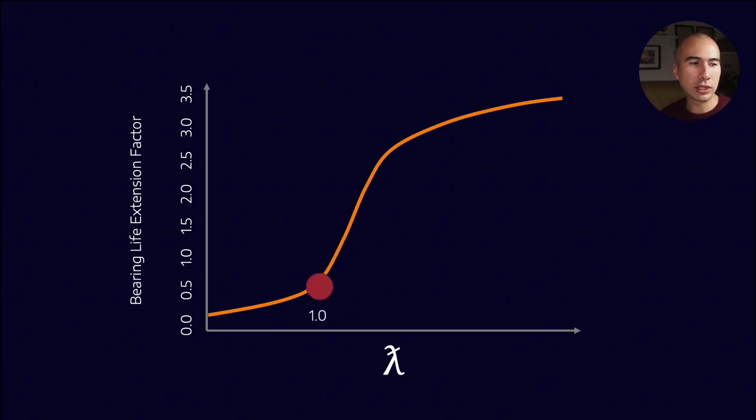So two seems to be sort of like the optimal number. And if you'll see that as you start to get to a specific film thickness of one, now we're entering that sort of mixed and boundary film lubrication. And that's why we get a reduction in our bearing life. Now, why am I talking about this in the context of open gears?